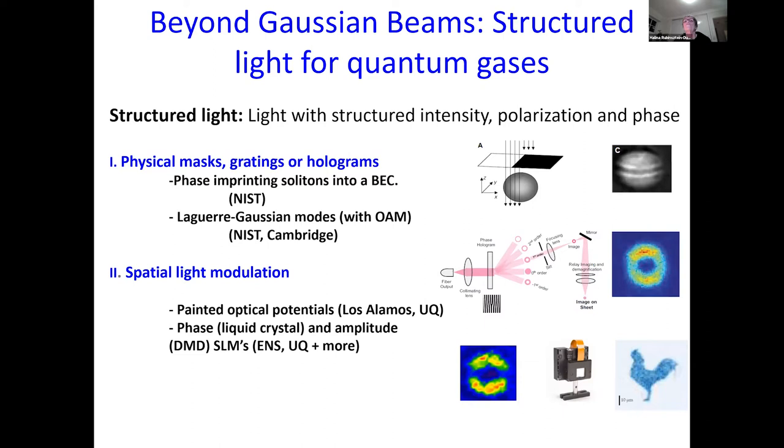How do people create structured light? What we want to be able to play with is intensity, polarization, and phase. I can use systems like physical masks, gratings or holograms. For example, in NIST, they use phase imprinting solitons into a BEC. The use of Laguerre Gaussian modes has also been done, which carry orbital angular momentum, which was done in NIST and Cambridge. Now with spatial light modulators, there are painted potential optical potential is in Los Alamos and we are doing it as well. And then there are games with phase liquid crystal and amplitude things in DMD SLMs. And this is INS, UQ, and many more labs.